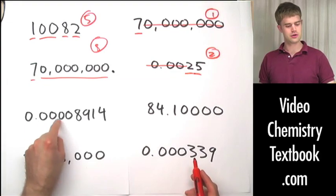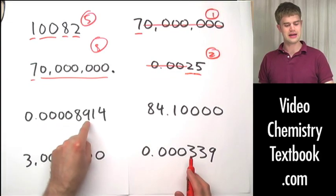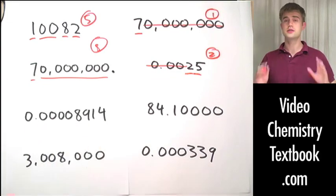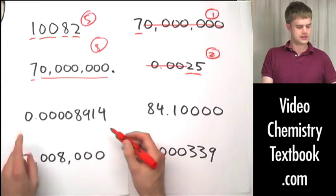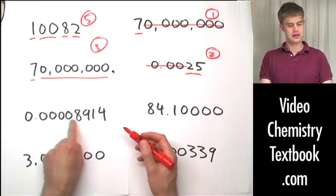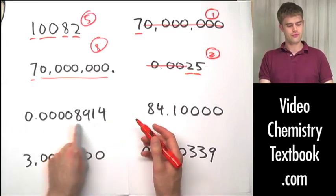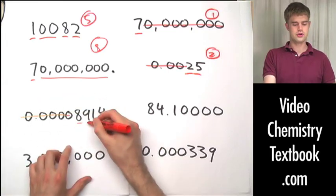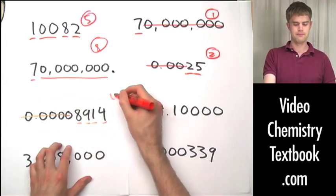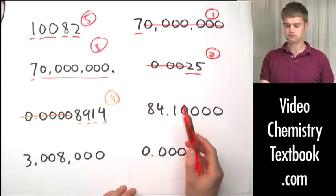0.00008914. The same rule applies here — all these zeros to the left coming before the non-zero digits don't matter. There are 4 significant figures in this number.